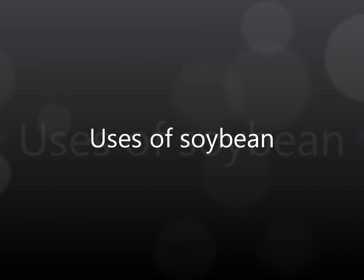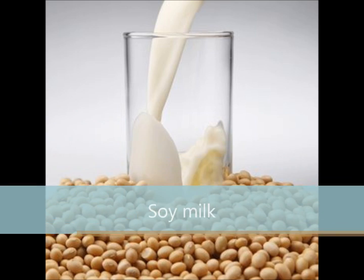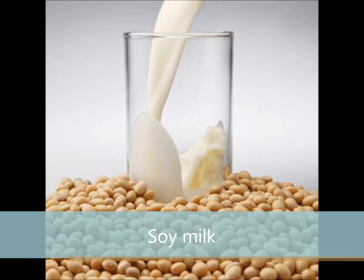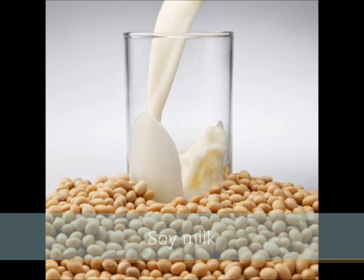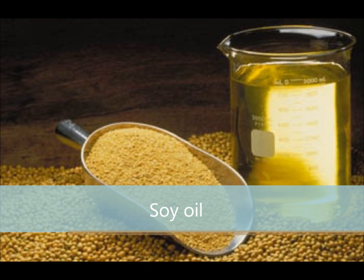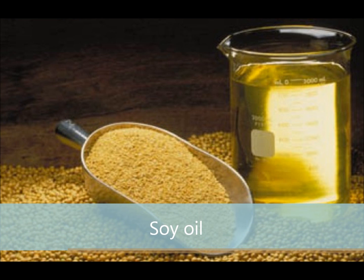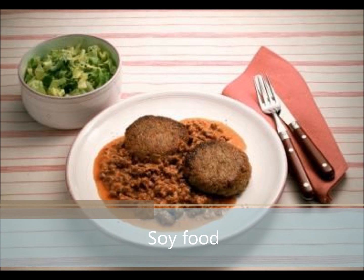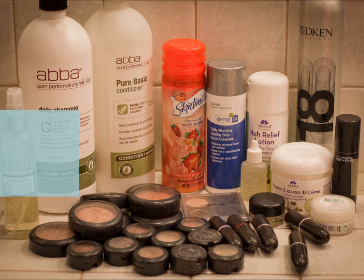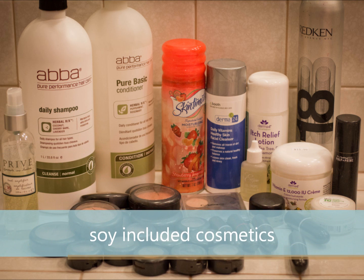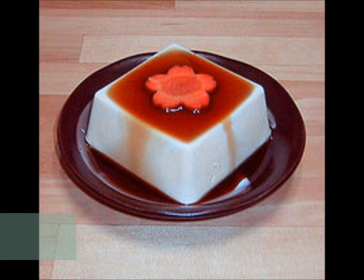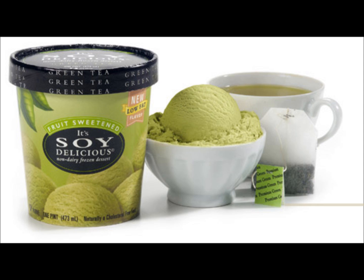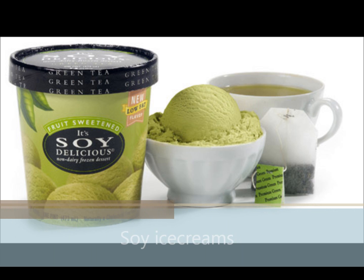Uses of soybean: Soybean milk can be used as a substitute for cow milk because of its rich protein content. Soybean oil is one of the most widely used vegetable oils in the world. Soy food is used as a substitute for meat. Soybean is also included in cosmetics. Soybean is used to make sauce, candles, and ice cream, etc.